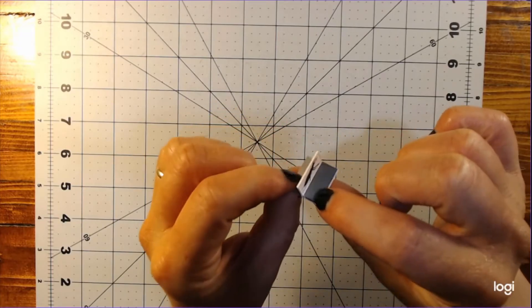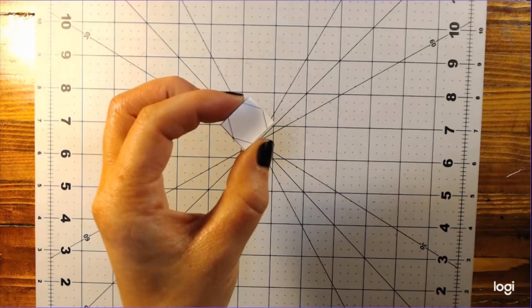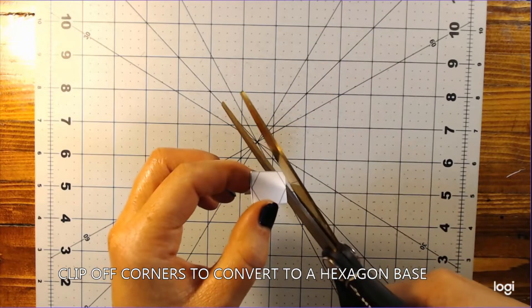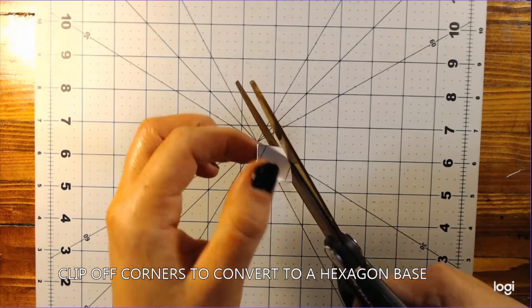If you prefer, you can also turn your bases into hexagons. Once the glue is thoroughly dried, you can use a pair of heavy duty scissors and follow the printed guidelines to clip the corners off the base through all layers of cardstock.